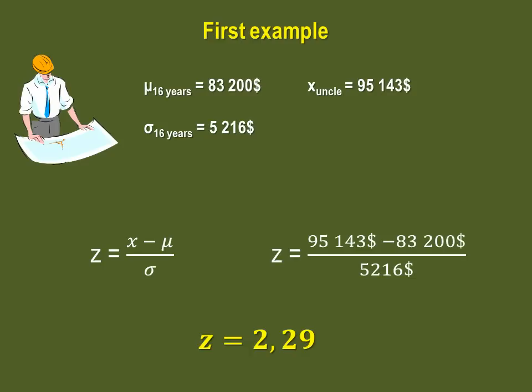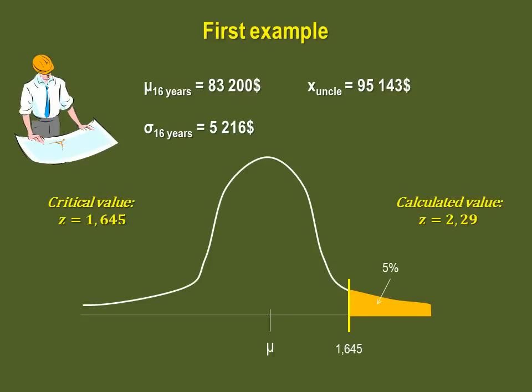Step 6 is to make the decision to reject or not the null hypothesis. To do so, let's bring back the sketch. How does 2.29 compare with the critical value of 1.645? That's correct. It is higher and as such falls into the critical, or the rejection, region.